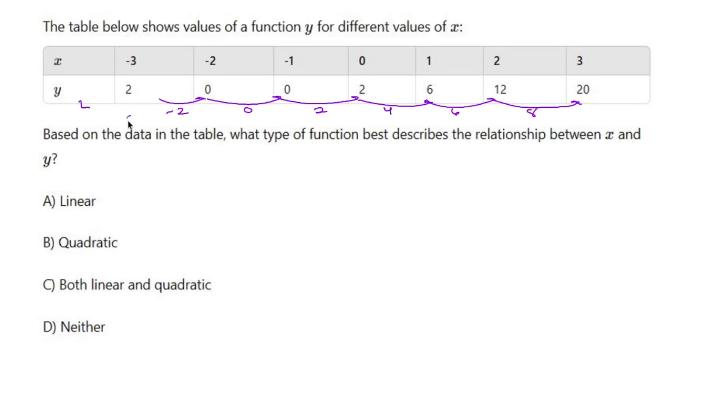So we check to see if it's quadratic by doing the same thing, but with our linear values. To get from negative 2 to 0, you add 2. To get from 0 to 2, you add 2.